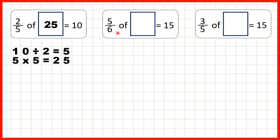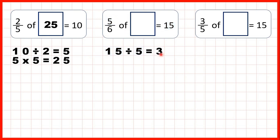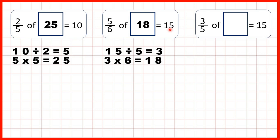Now, five-sixths of what equals 15? Again, it's a missing number problem, so rather than dividing by the denominator we divide by the numerator: 15 divided by 5 is 3. Then we take that 3 and multiply it by the denominator, which gives us 18 as our total quantity. We can check that this works because 18 divided by 6 is 3, and 3 times 5 is 15.